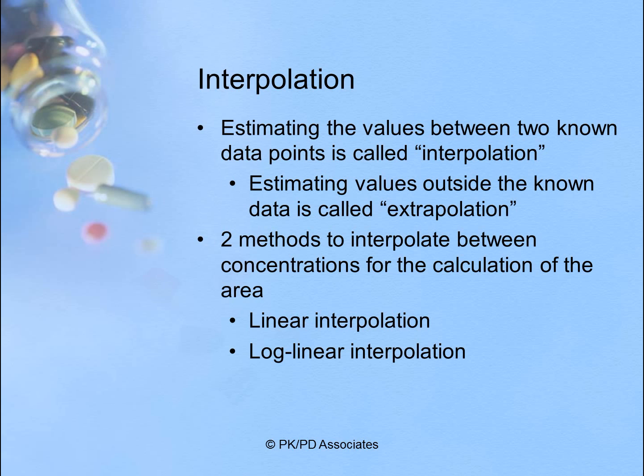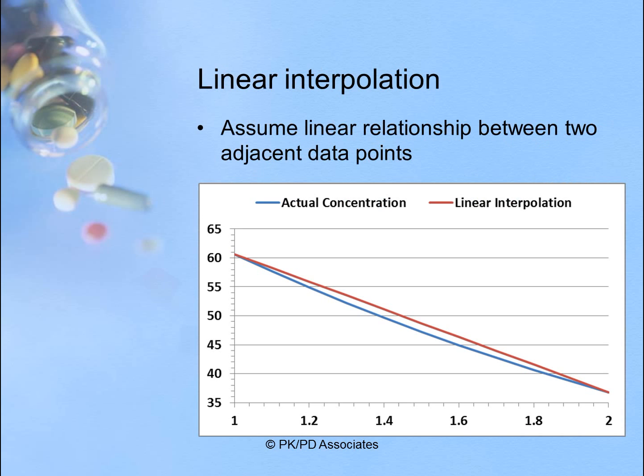One thing we need to do is interpolate or estimate the values between two known data points. Estimating values outside of known data is called extrapolation, but here we're doing interpolation. There are two methods to interpolate between concentrations for the calculation of area: the linear interpolation method and the log-linear interpolation method.